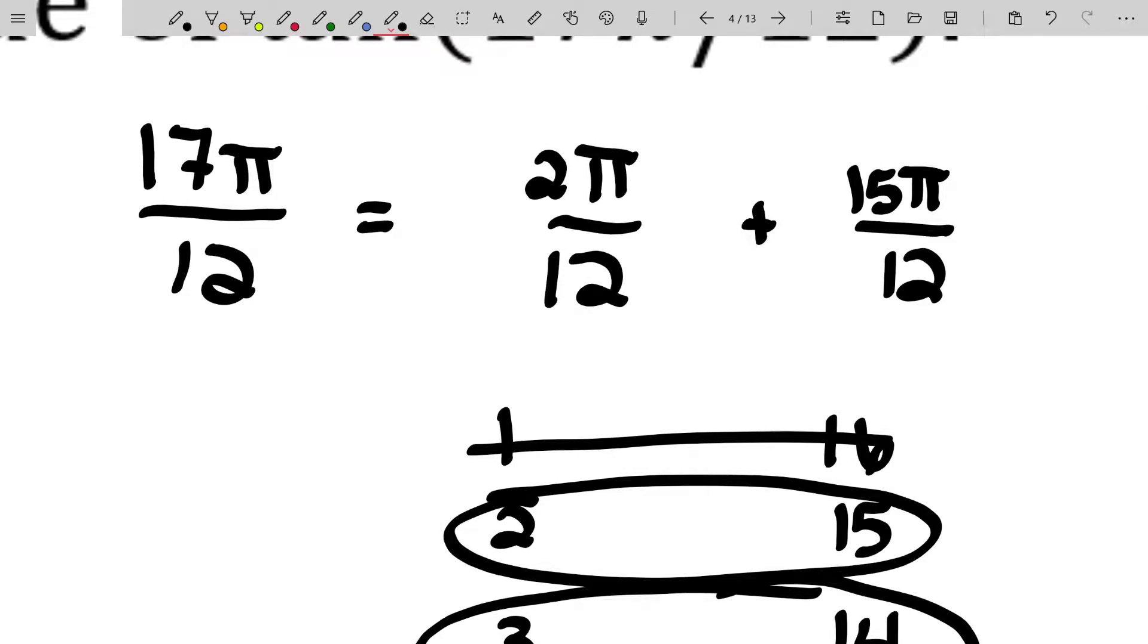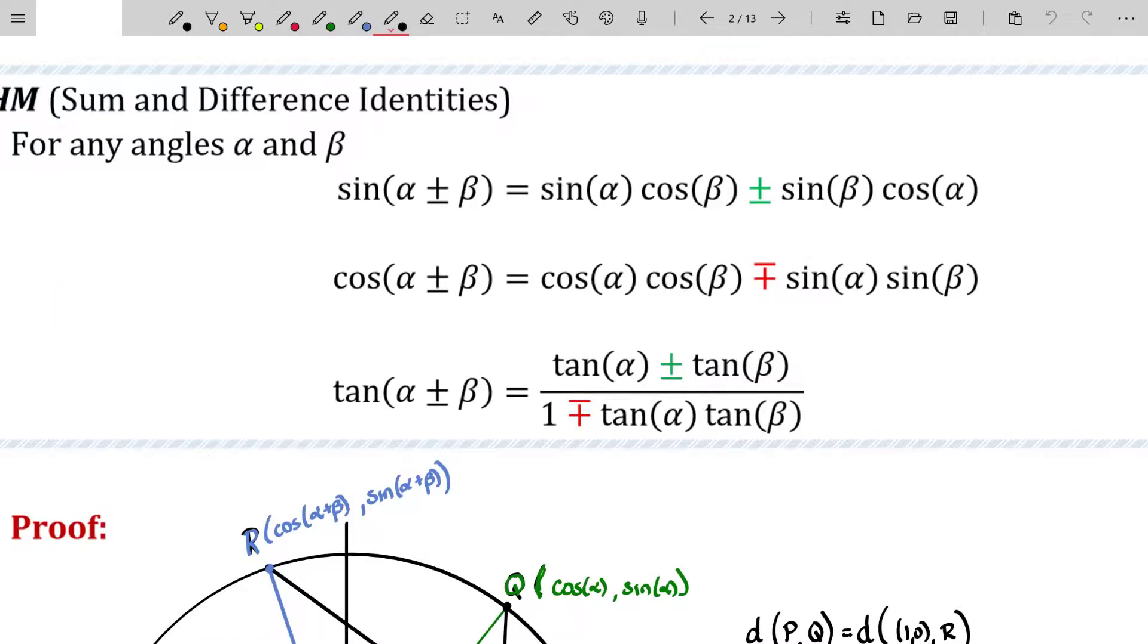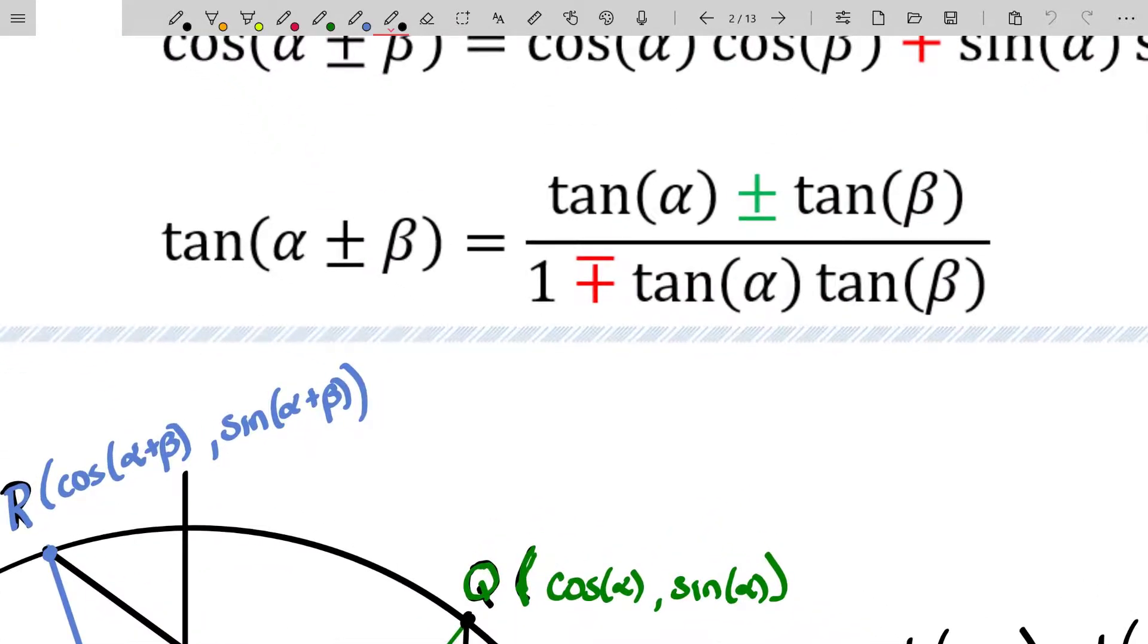So tangent of 17 pi over 12 is the same thing as the tangent of two pi over 12 plus 15 pi over 12 and we know how that reduces. That's going to be the tangent of pi over six special angle plus divide top and bottom by three and you'll get five pi over four. Again, that has a reference angle that is special. And now I just need to figure out what is the tangent of the sum of two angles. And that's the one where I told you should not really bother memorizing. It doesn't come up enough. I included it as an example, but in reality, it just doesn't come up enough to really memorize.